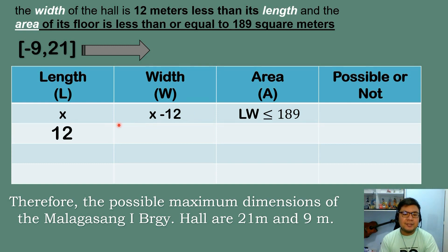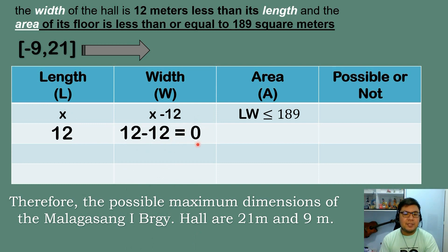Starting from positive 12: if x equals 12, then width equals 12 minus 12 equals 0. Since a width of zero is not possible, 12 is also not a valid solution.